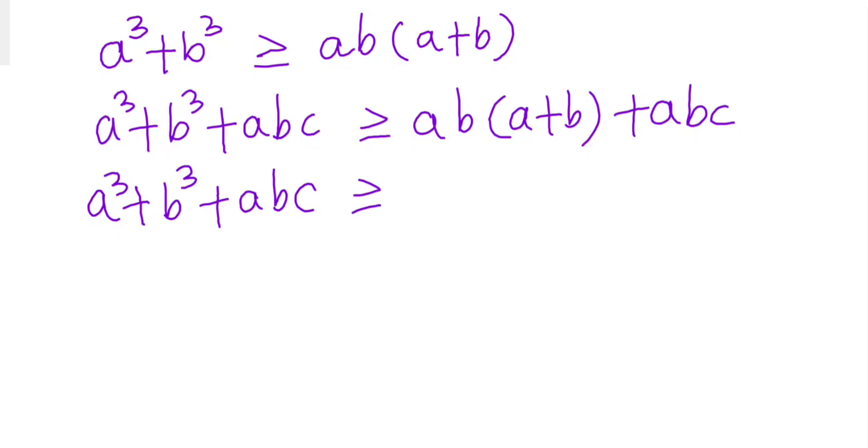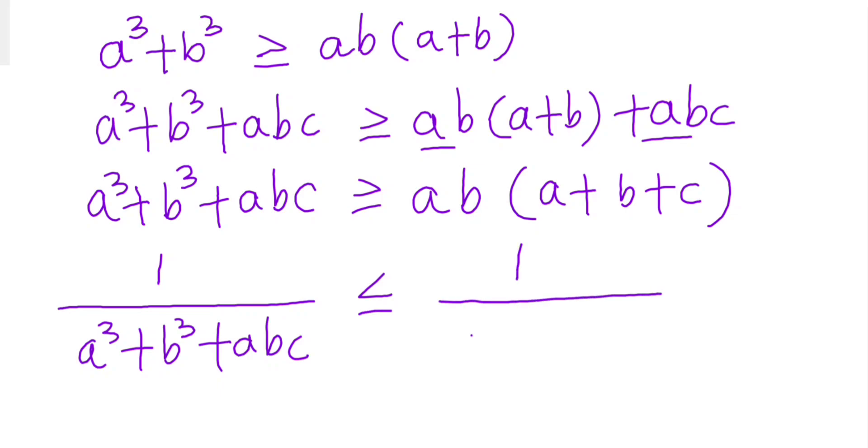Now let's take the inverse. According to our question we want 1/(a³ + b³ + abc), so when you take inverse this inequality sign will flip and you will get 1/(ab(a + b + c)).